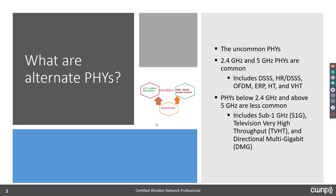We're talking about PHYs that operate below 2.4 GHz and above 5 GHz — less common ones. One is aptly named sub-1 GHz: the S1G PHY. Another is the television very high throughput, or TVHT PHY. Both of those are under 1 GHz, so they have longer wavelengths and better range. And above 5 GHz we're dealing with millimeter wavelength at 60 GHz — that's directional multi-gigabit or DMG.